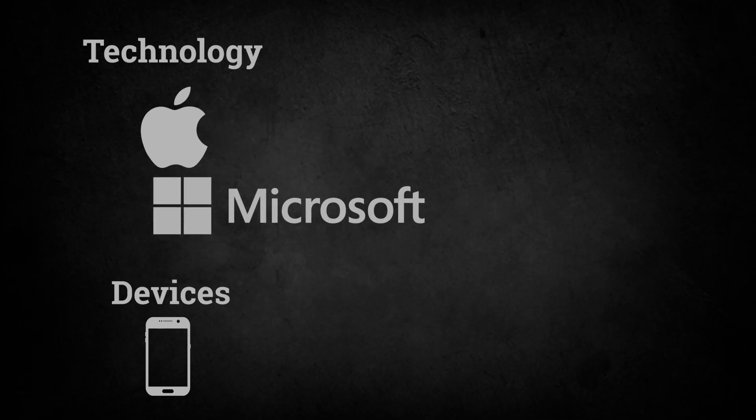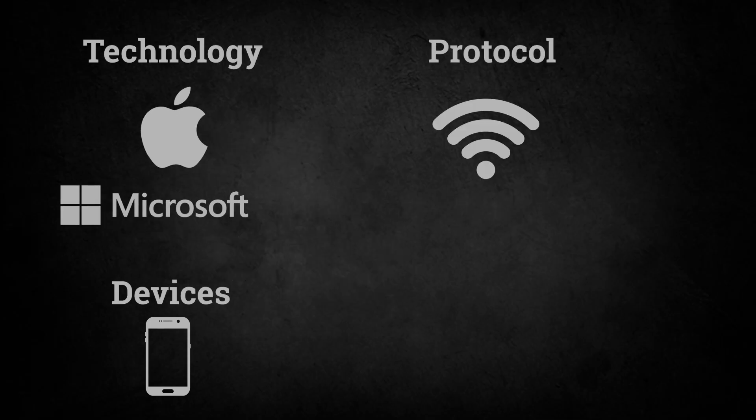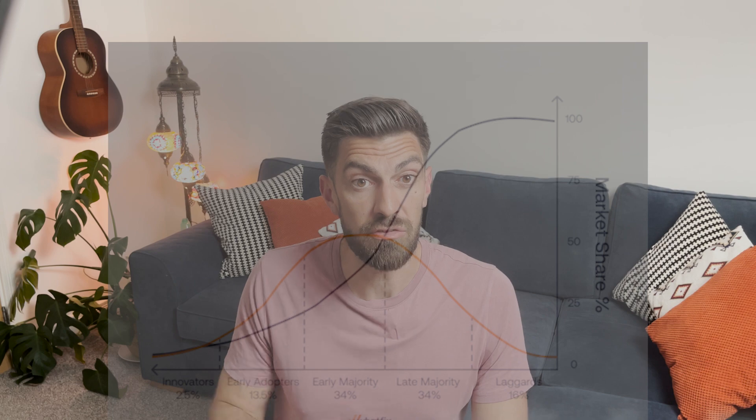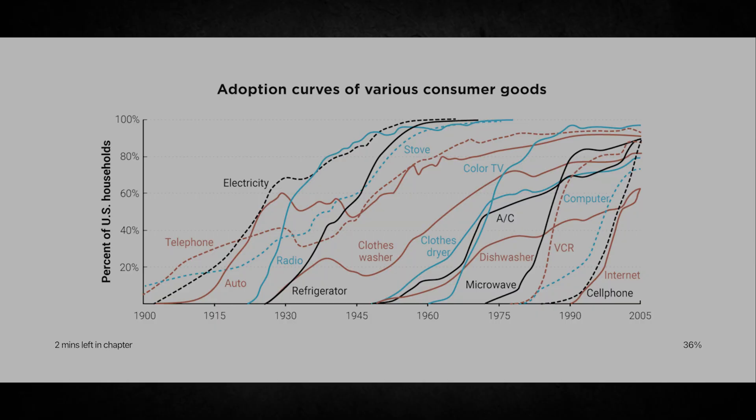This led me to realize why Bitcoin behaves so differently from every bubble in history. Bitcoin isn't a device like a smartphone, and it's not technology like Apple or Microsoft. Bitcoin is a protocol — like the internet, electricity, or the telephone itself. The telephone protocol took around 65 years to reach 50% adoption. Electricity took about 55 years. The internet took 33 years. Every protocol follows this S-curve. As Jeff Booth, author of The Price of Tomorrow, explains: the coin isn't within the system — it's outside the system, bounded by energy, repricing that entire system over time. Protocols are winner-take-all. Open protocols win.